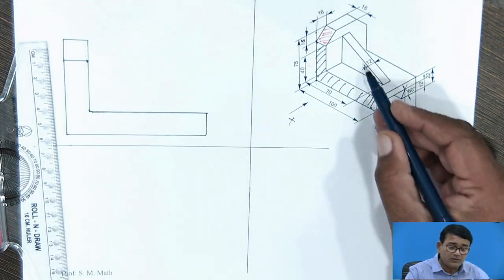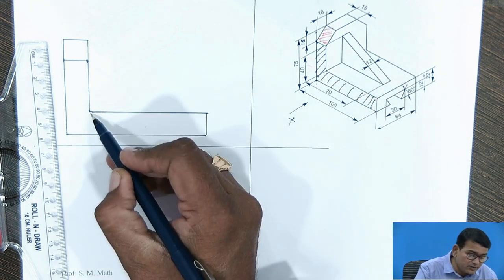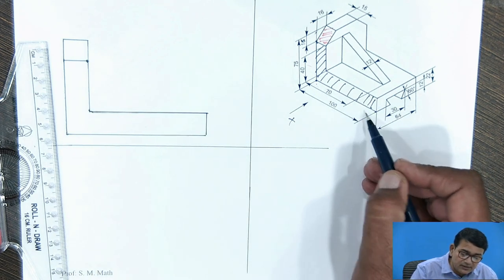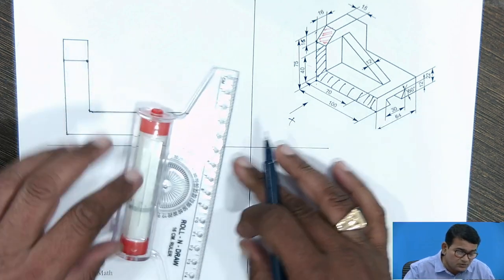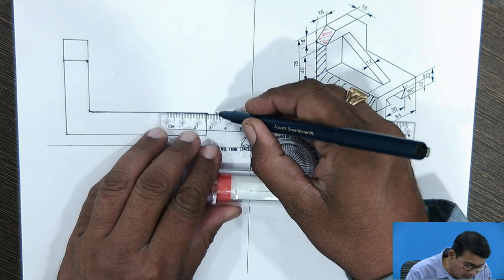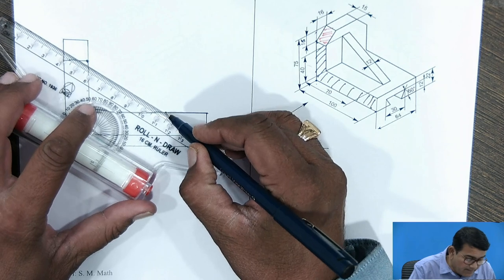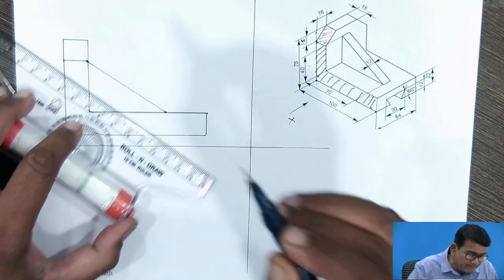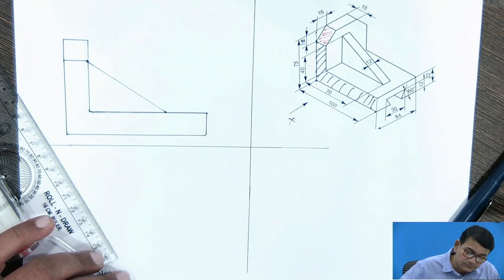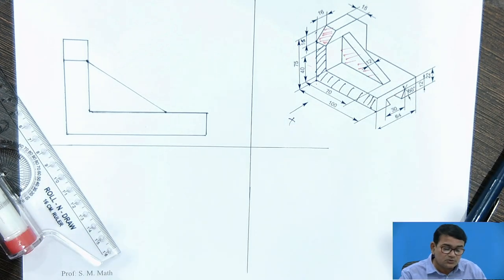There are two surfaces, and there is one more supporting rib. The rib starts here — it is given as 40 mm — and ends at 30 mm from the other end, so it travels 30 mm in that direction. Total length is 70 mm. Join it — this portion is to be drawn.